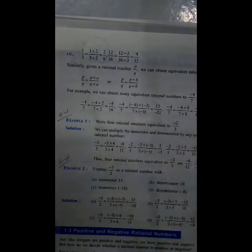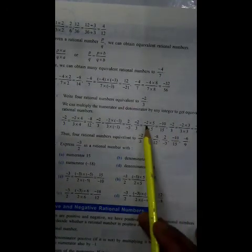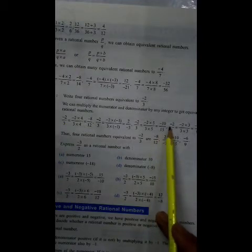Write 4 rational numbers equivalent to minus 2 by 3. Here is the method: we multiply minus 2 with 4 and 3 with 4, giving minus 8 by 12 as our first number. Next, multiply minus 2 with minus 1 and 3 with minus 1 — minus times minus is plus, so we get 2 by 3. Similarly, multiplying minus 2 with 5 and 3 with 5 gives minus 10 by 15, which is also equivalent to minus 2 by 3.